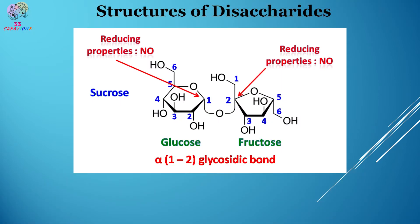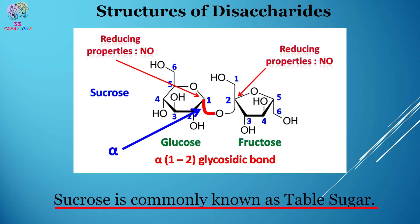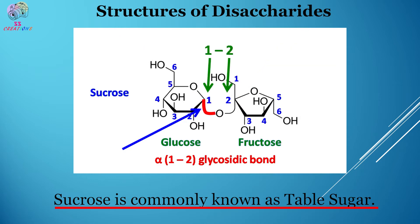The fourth disaccharide is sucrose, commonly known as table sugar, made up of glucose and fructose joined together by an α-1,2 glycosidic bond. It should be noted that in sucrose, glucose has the alpha structure while fructose has the beta structure. Now let's classify polysaccharides.